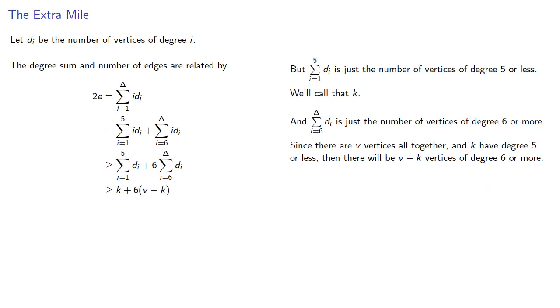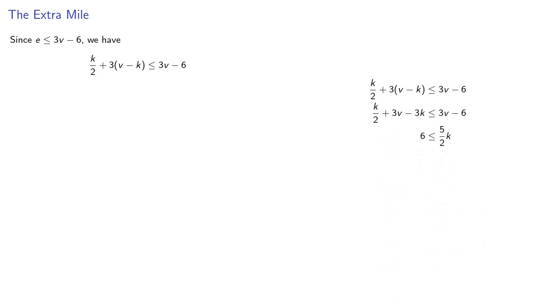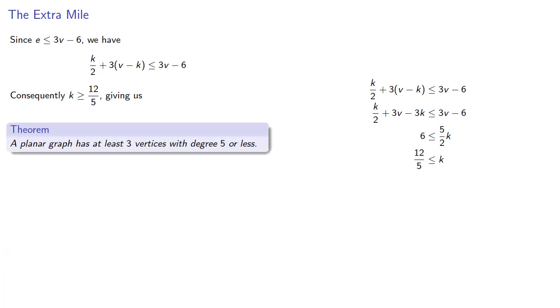Putting this all together, we find an inequality for 2e. But again, in a planar graph e has to be less than or equal to 3v minus 6, and so this gives us the inequality. With a little bit of algebra, we find that k must be greater than or equal to 12 fifths. Since k is the number of vertices of degree 5 or less and k must be at least 12/5, this means that the planar graph has at least 3 vertices with degree 5 or less.